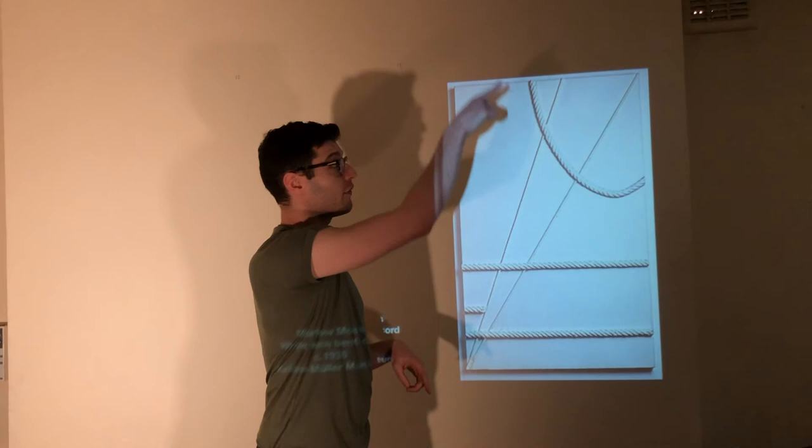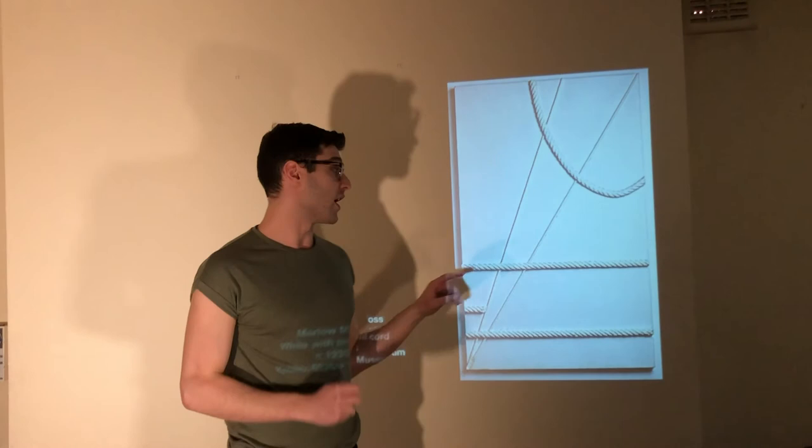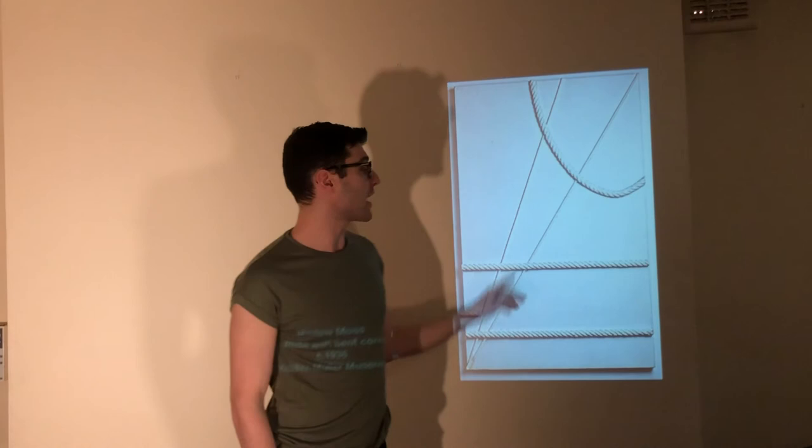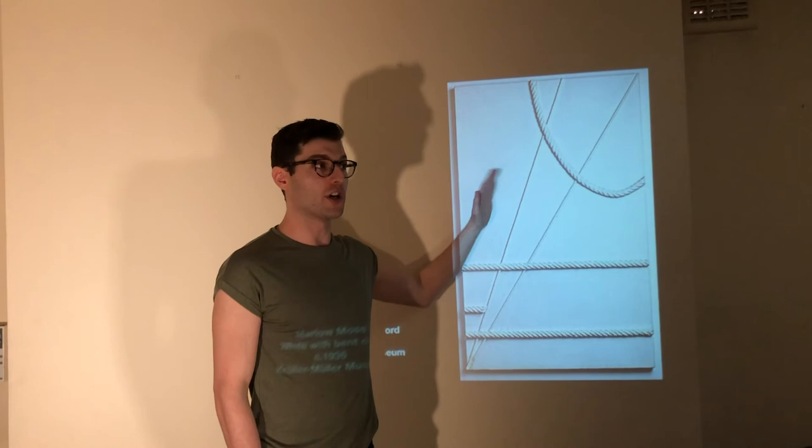Moss, much to the dismay of Mondrian, incorporates these diagonal lines into her work and these curves. So diagonal lines that do not perfectly balance a vertical and a horizontal. And curved lines that totally ignore the vertical and horizontal.